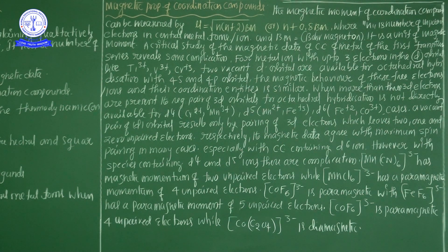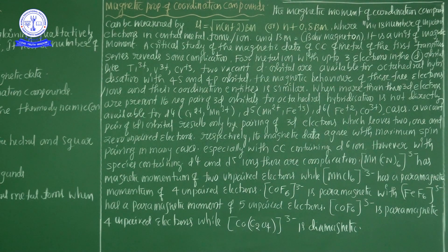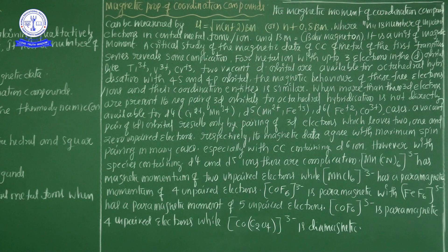A critical study of the magnetic data of coordination compounds of metals of the first transitional series reveals some complications. Whenever you study coordination compound magnetic momentum, complications start from the first transitional series. This is an important observation in the magnetic data of first transitional series coordination compounds.